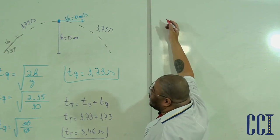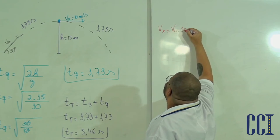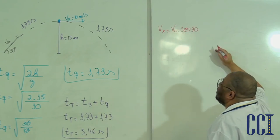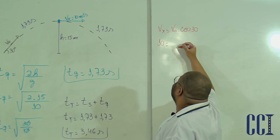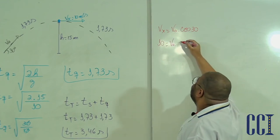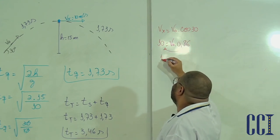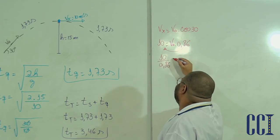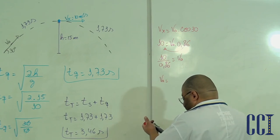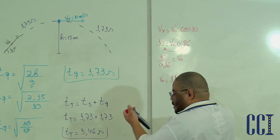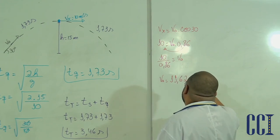Se ele quer a velocidade inicial e eu já tenho Vx, basta usar: Vx = V0 × cos(30°). Então: 10 = V0 × 0,86. Passando o 0,86 dividindo: V0 = 10 / 0,86 ≈ 11,60 metros por segundo. Essa é a resposta — nem precisava ter feito todos aqueles cálculos, mas é bom treinar.